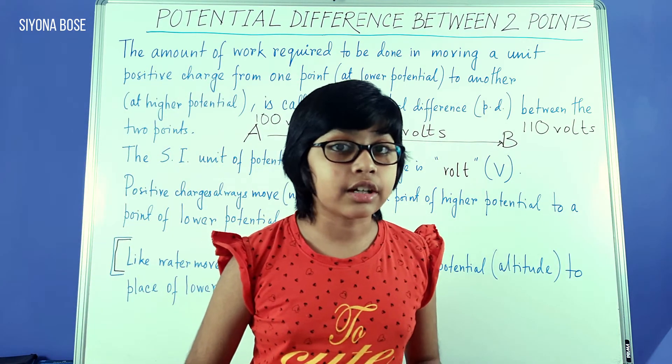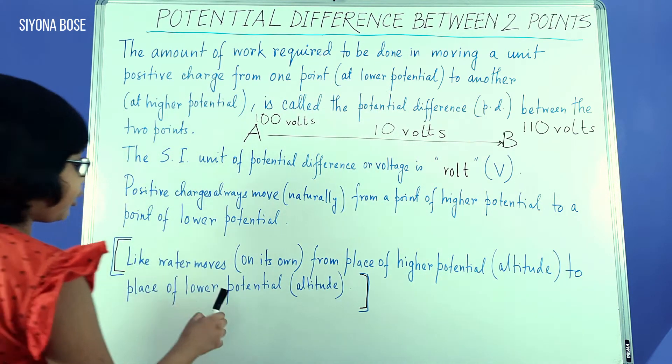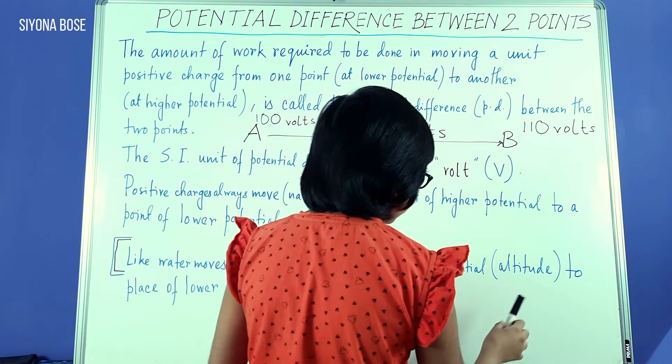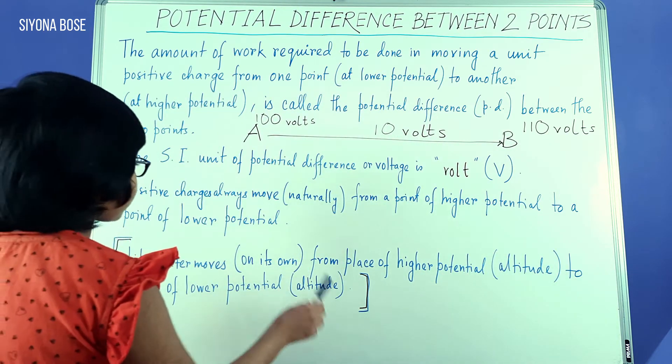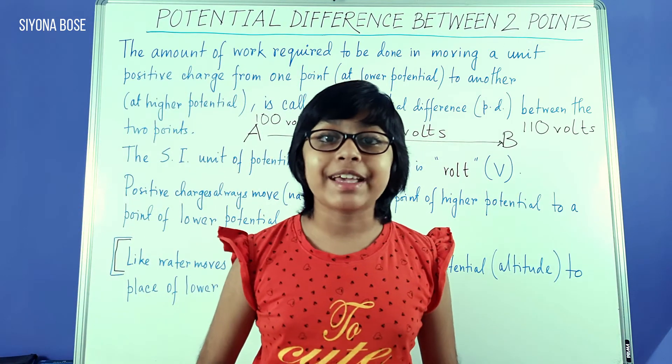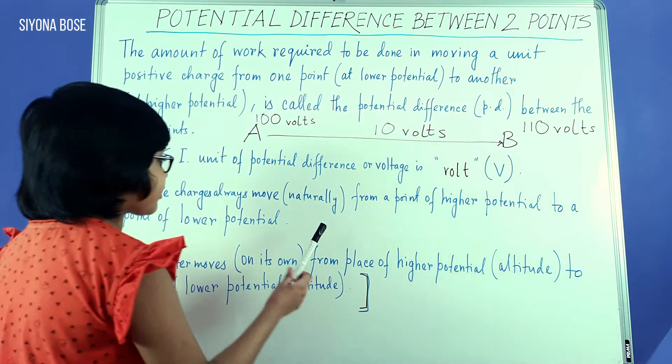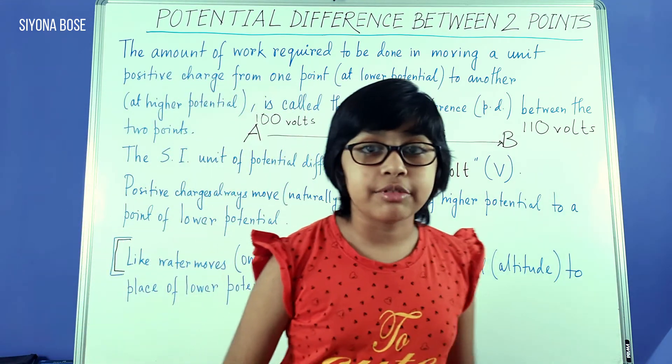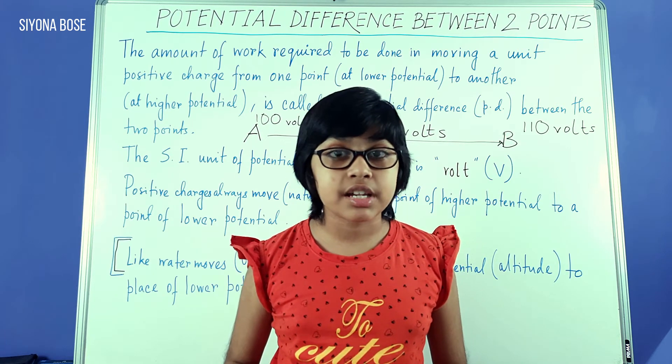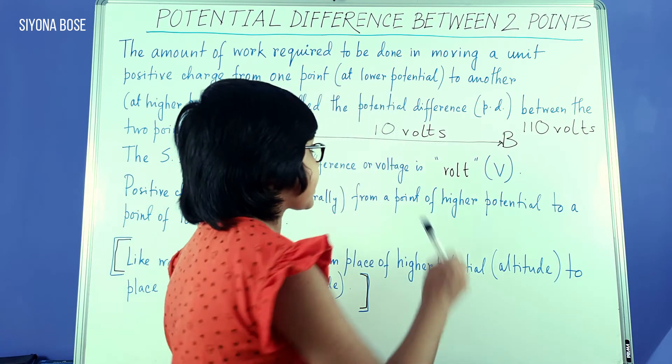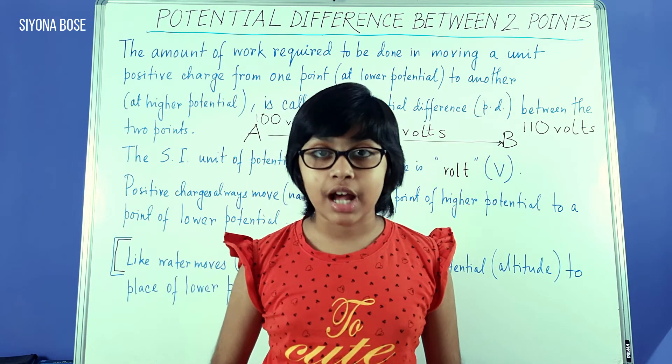Like in this third bracket, I've given an example of like water moves on its own from a place of higher potential altitude to a place of lower potential altitude. So this example makes you think that even nature exhibits the same thing, like in case of the unit positive charges which we are talking about now. So I'm giving you a few moments to look at the board's contents and also look at this example and understand what is potential difference to enhance your concept.